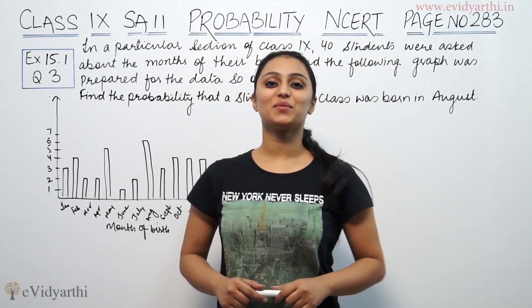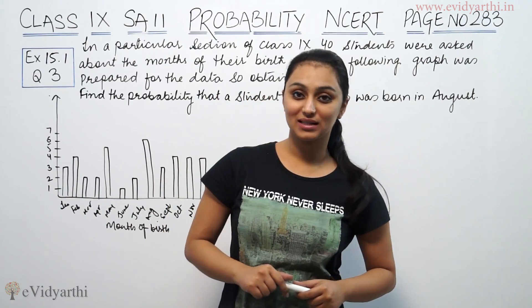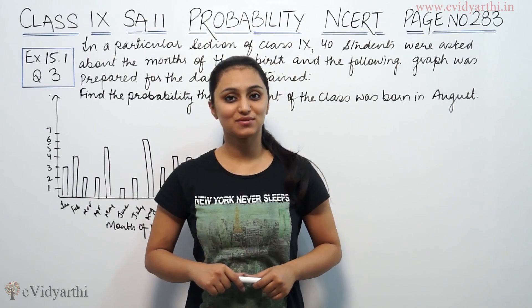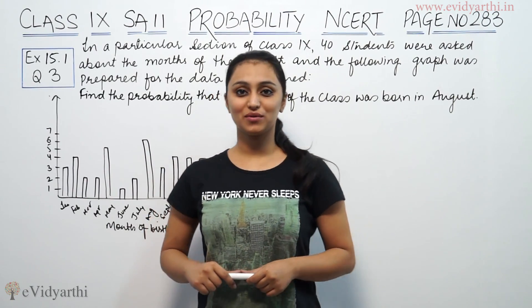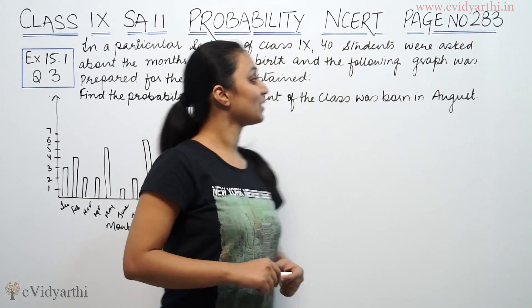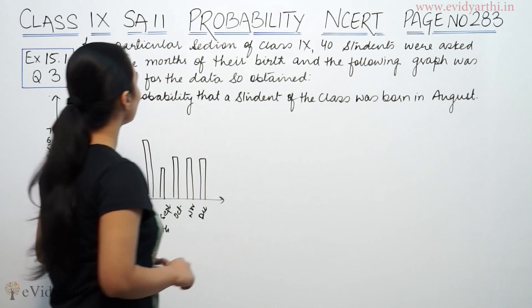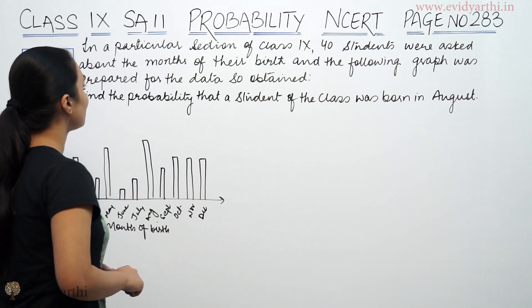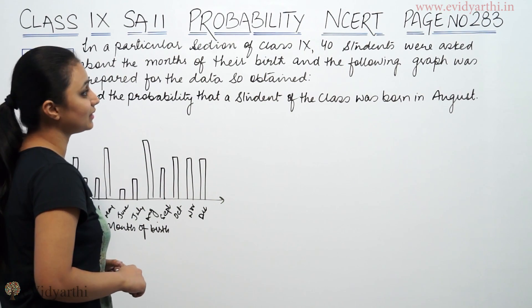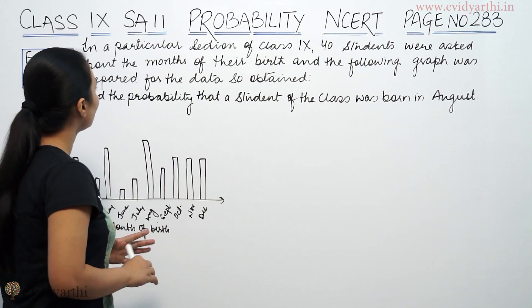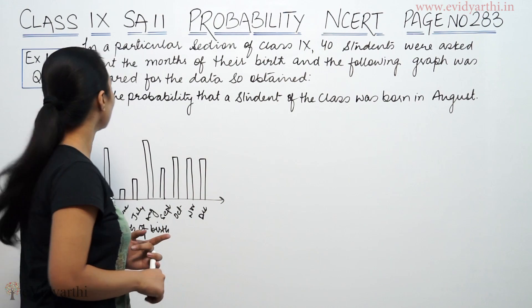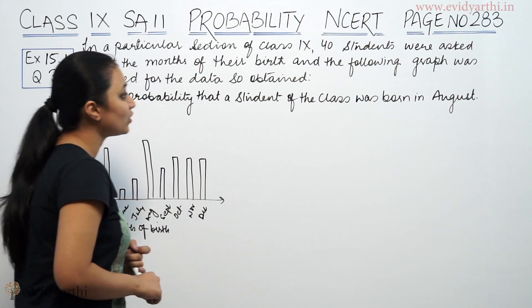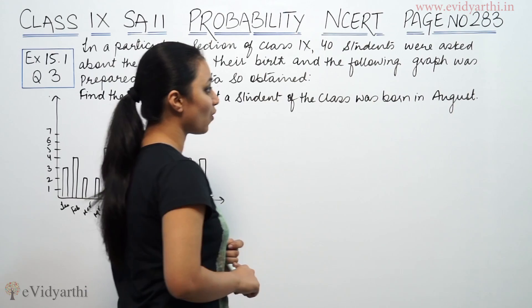Hi, this is Kushku with another question of probability. This is question number 3 from exercise 15.1, page 283 from NCERT. In a particular section of class 9, 40 students were asked about the months of their birth and the following graph was prepared for the data so obtained. Find the probability that a student of the class was born in August.